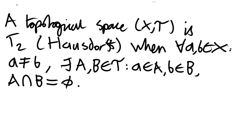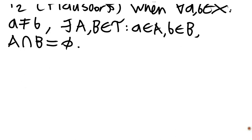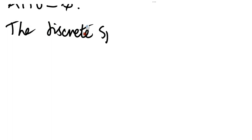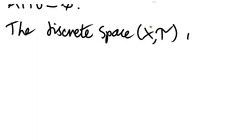That's our condition for a space to be T2 or Hausdorff: any distinct pair of points can be associated with non-intersecting open sets which contain them respectively. There's a really large and important set of examples of Hausdorff spaces, but let me first discuss a rather trivial one just to illustrate the concept. For some non-empty set X, the discrete space is T2.